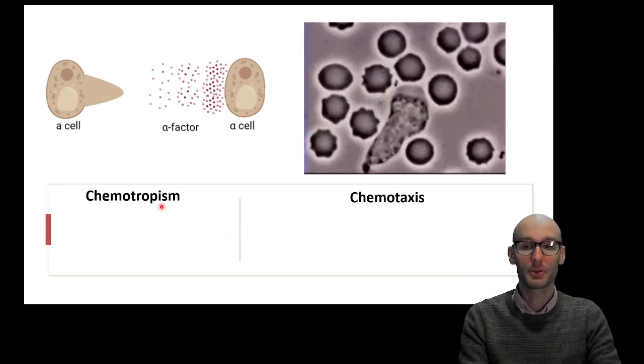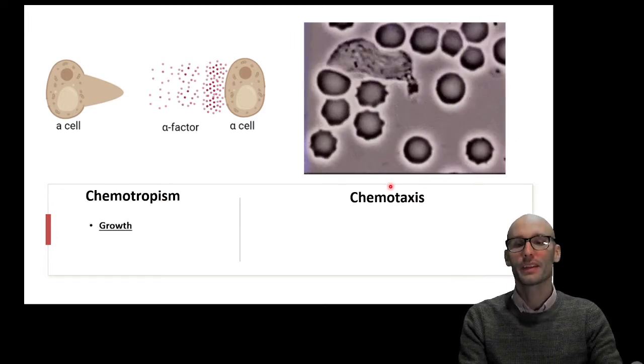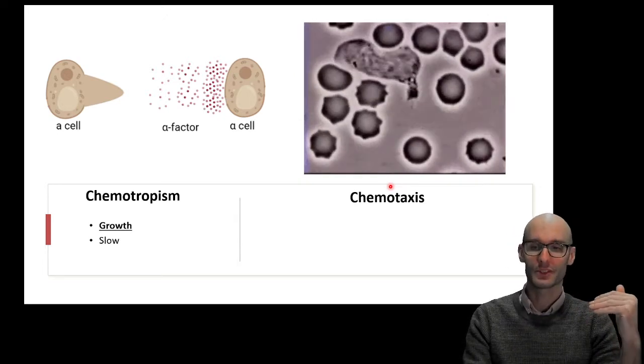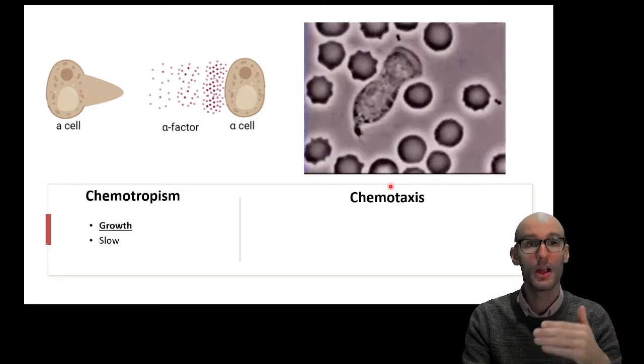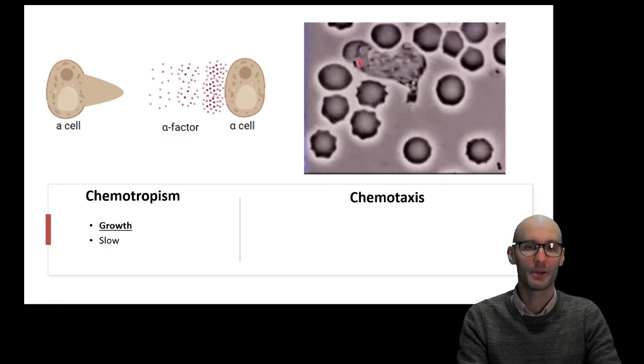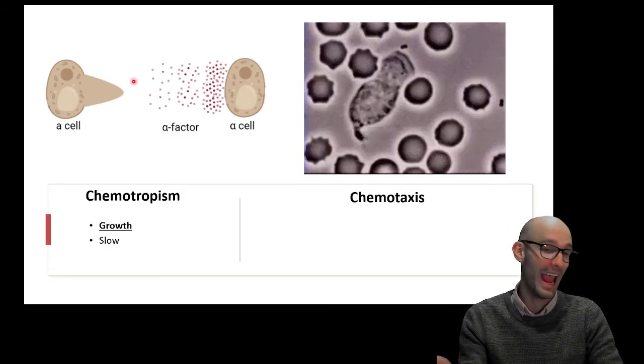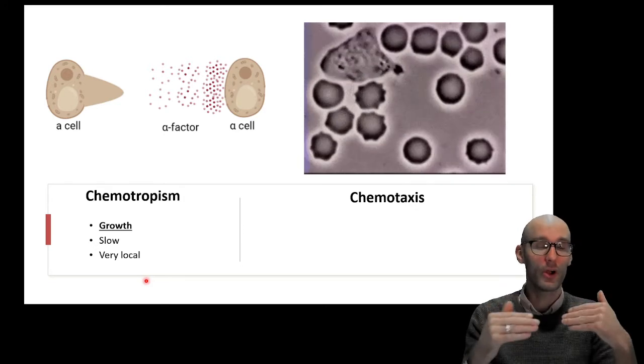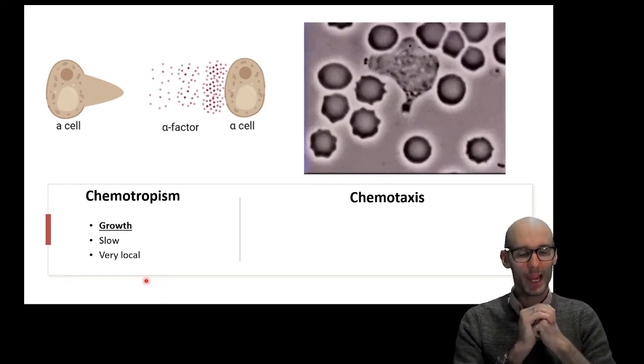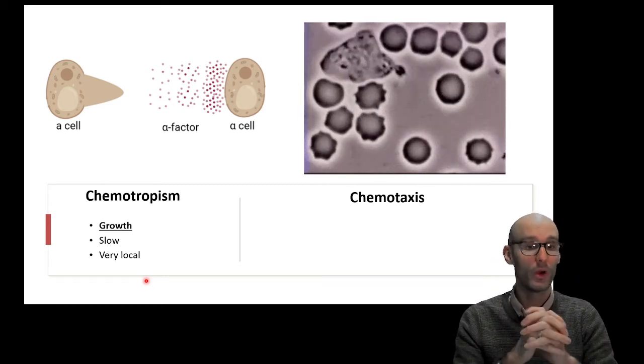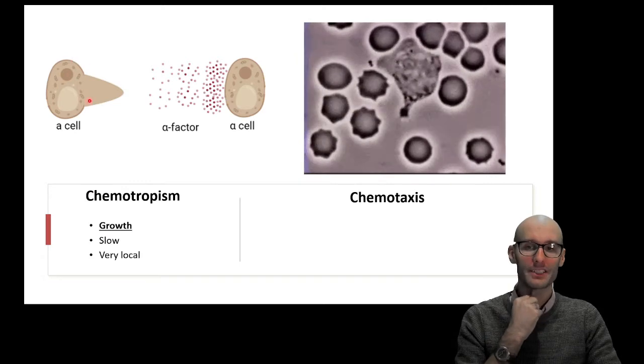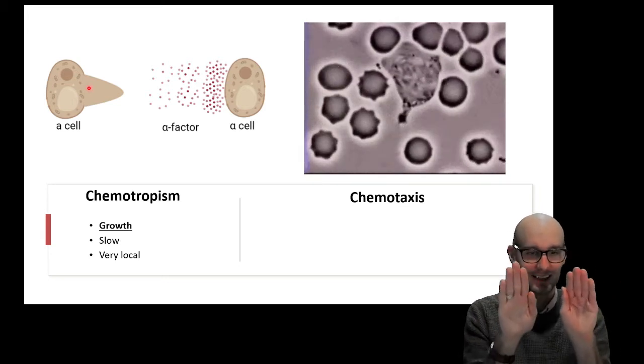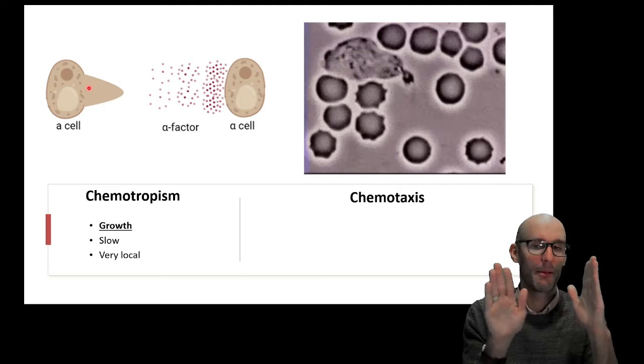So let's discuss the differences between chemotropism and chemotaxis. Chemotropism, the biggest difference is it's a growth, whereas chemotaxis is a movement. But there are other differences. One is it's slow. Growth is typically slow, whereas movement is typically much faster. This is happening over the periods of minutes. This happens over the period of an hour or so. So this is quite slow. This is quite fast. And it's very local. Because it's a growth, it's often very local. And it typically happens over very small distances. There are the rare exceptions, but for the most part, for example, these yeast cells won't grow if it's further than the width of another yeast cell. So it's very local. It can only really just start a small growth, about half the width of a yeast cell.